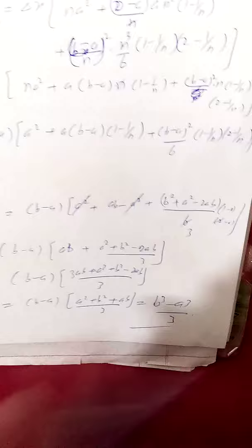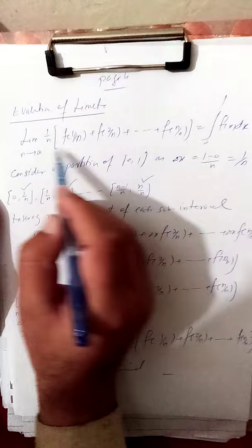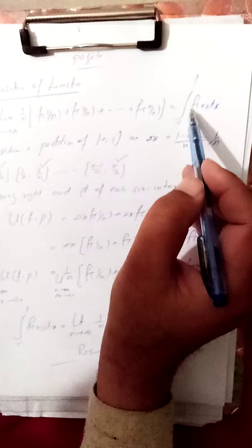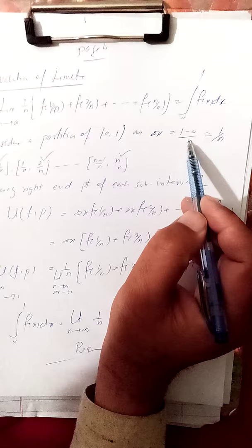Now, evaluation of limit of sum. The limit as n tends to infinity of (1/n)·[f(1/n) + f(2/n) + ... + f(n/n)] equals the integral from 0 to 1 of f(x) dx. Generally, we take a partition of the closed interval [0,1]: delta x equals (b−a)/n, where b equals 1 and a equals 0, so delta x equals 1/n. Taking partitions: 0, 1/n, 2/n, and so on.